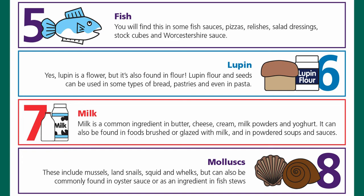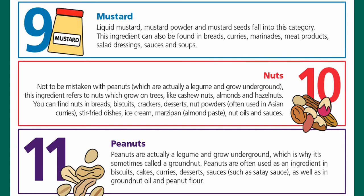Number eight is mollusks, including mussels, land snails, squid, and whelks, also commonly found in oyster sauce or as an ingredient in fish stews. Number nine is mustard — liquid mustard, mustard powder, and mustard seeds. This can also be found in bread, curries, marinades, meat products, salad dressings, sauces, and soups.